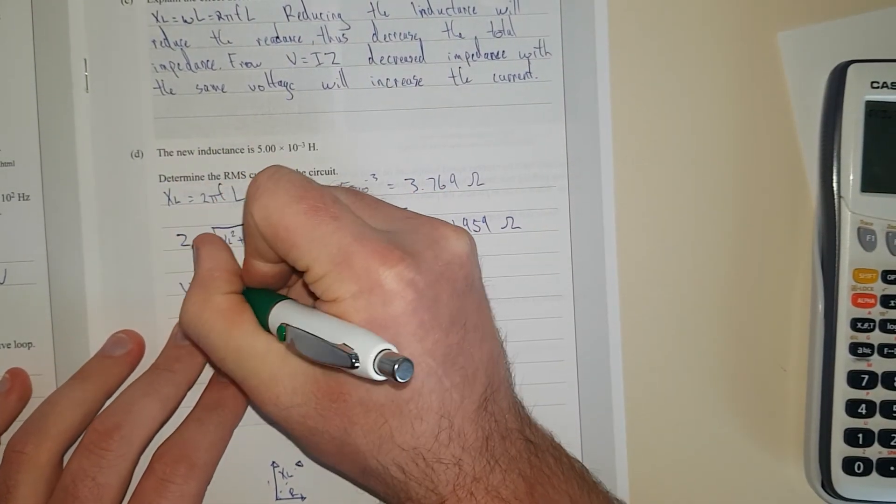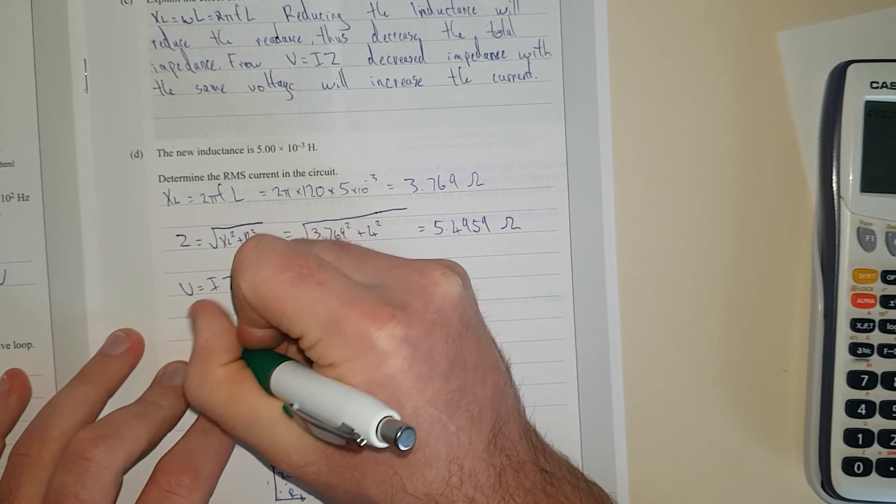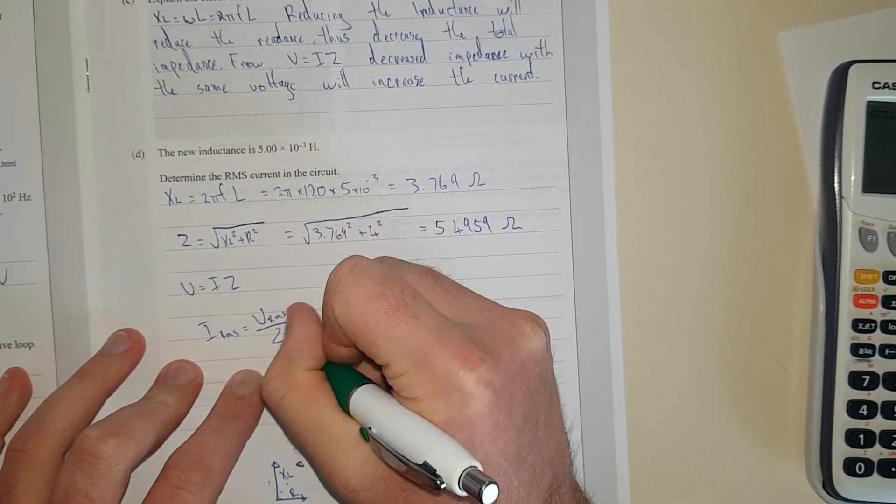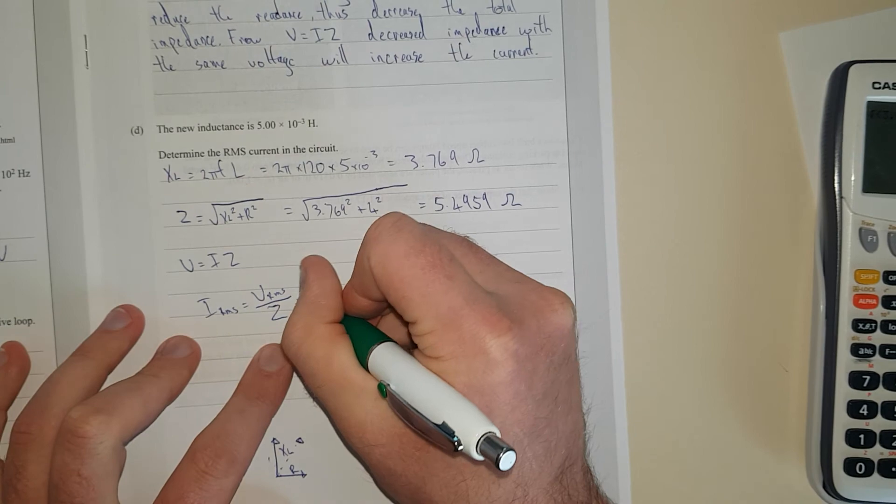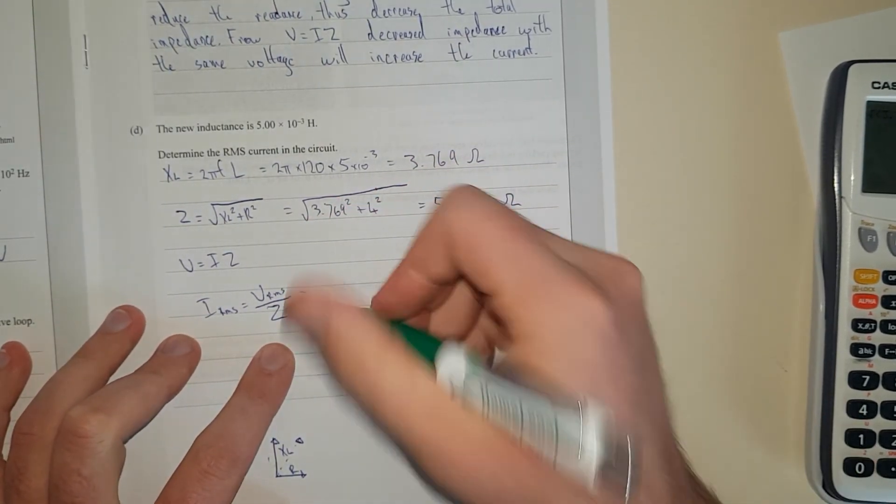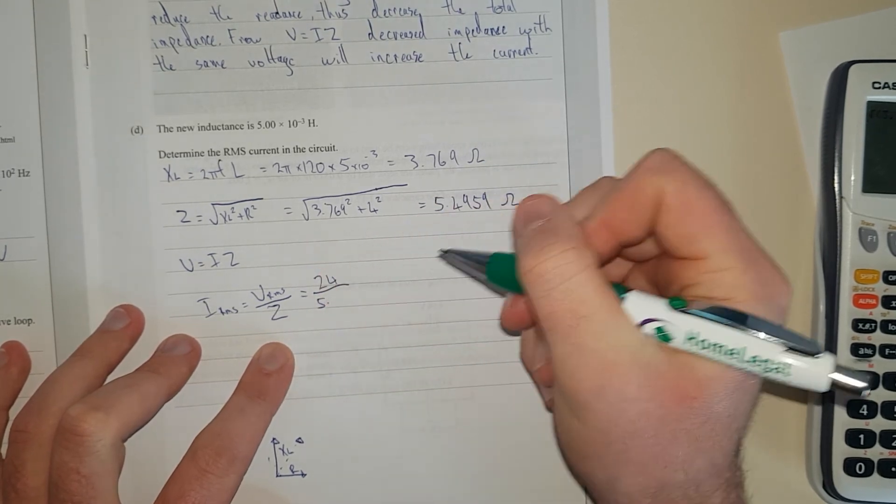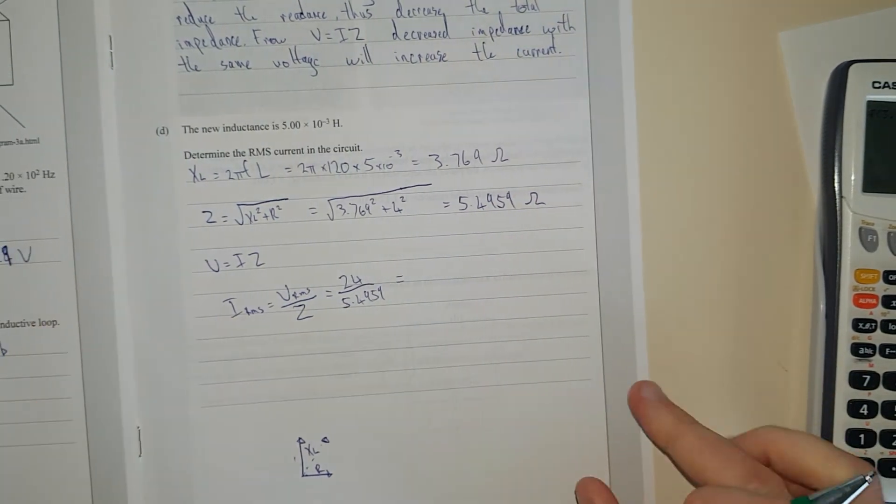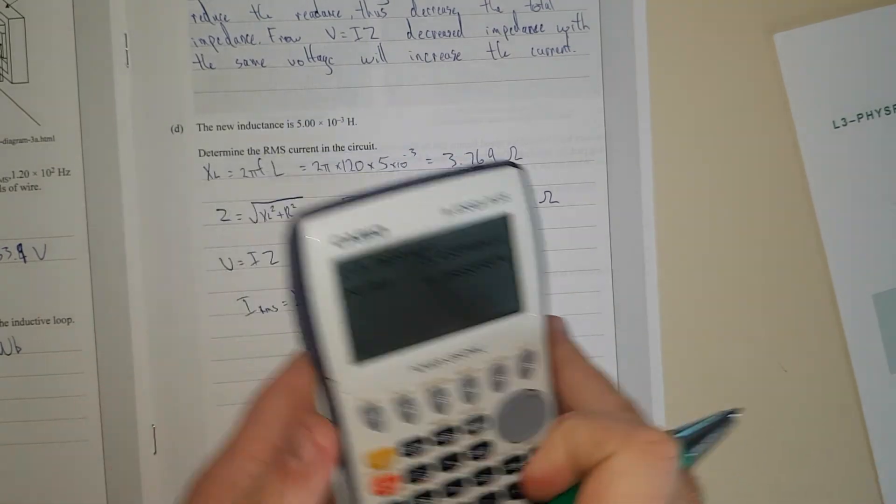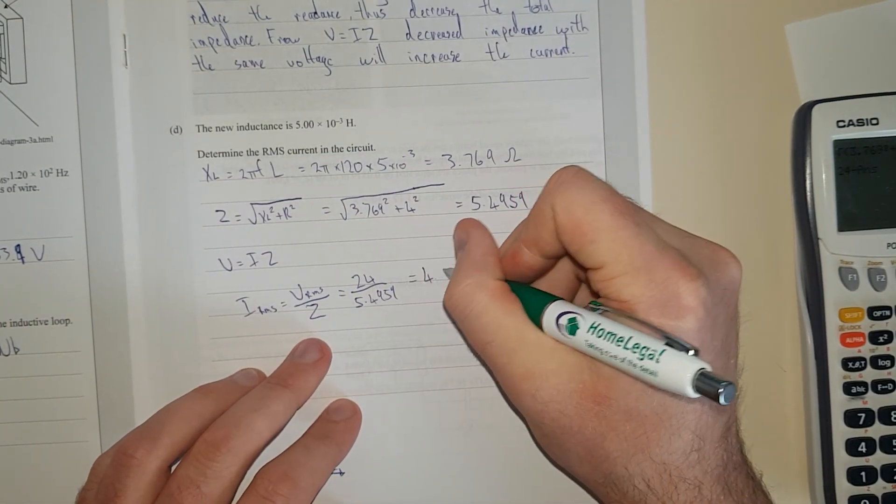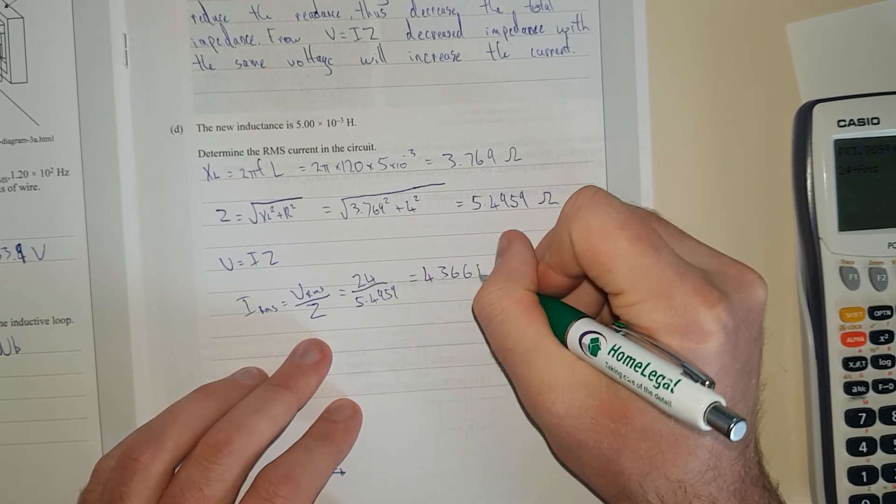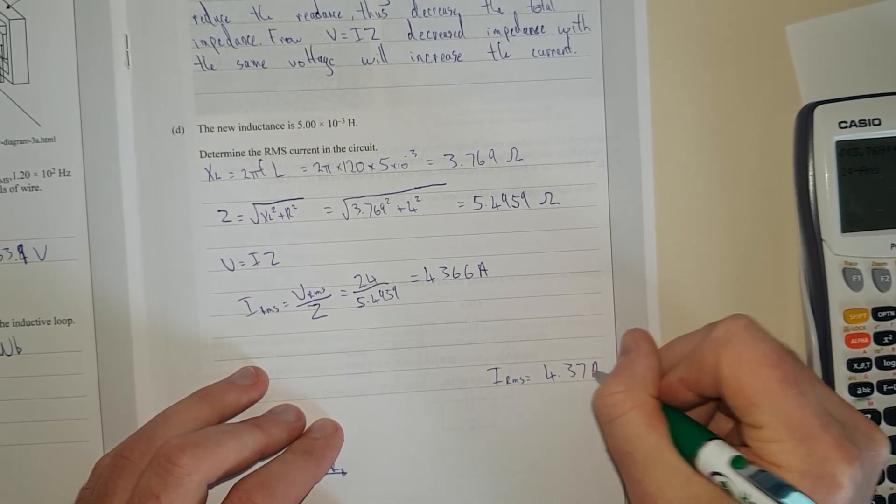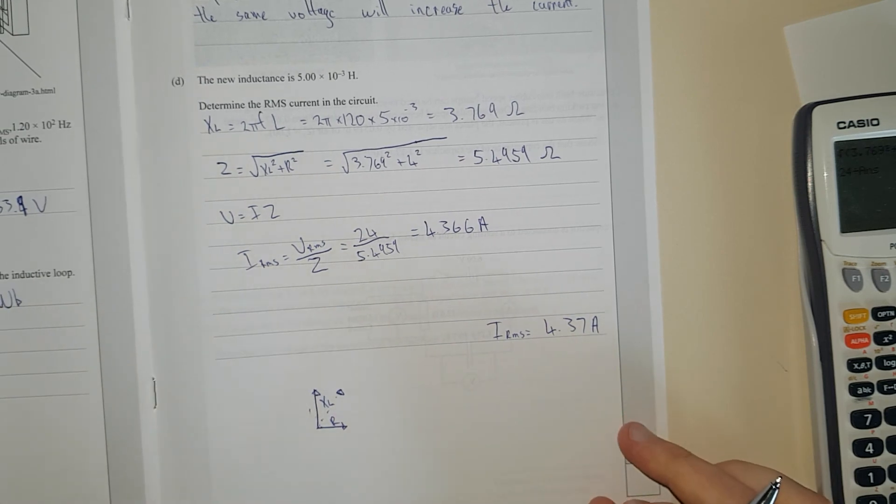V equals IZ, that's in your formula sheet. In other words, I RMS equals V RMS over impedance Z. So this is 24 divided by 5.4959, which equals 4.366 amps. So I RMS equals 4.37 amps.